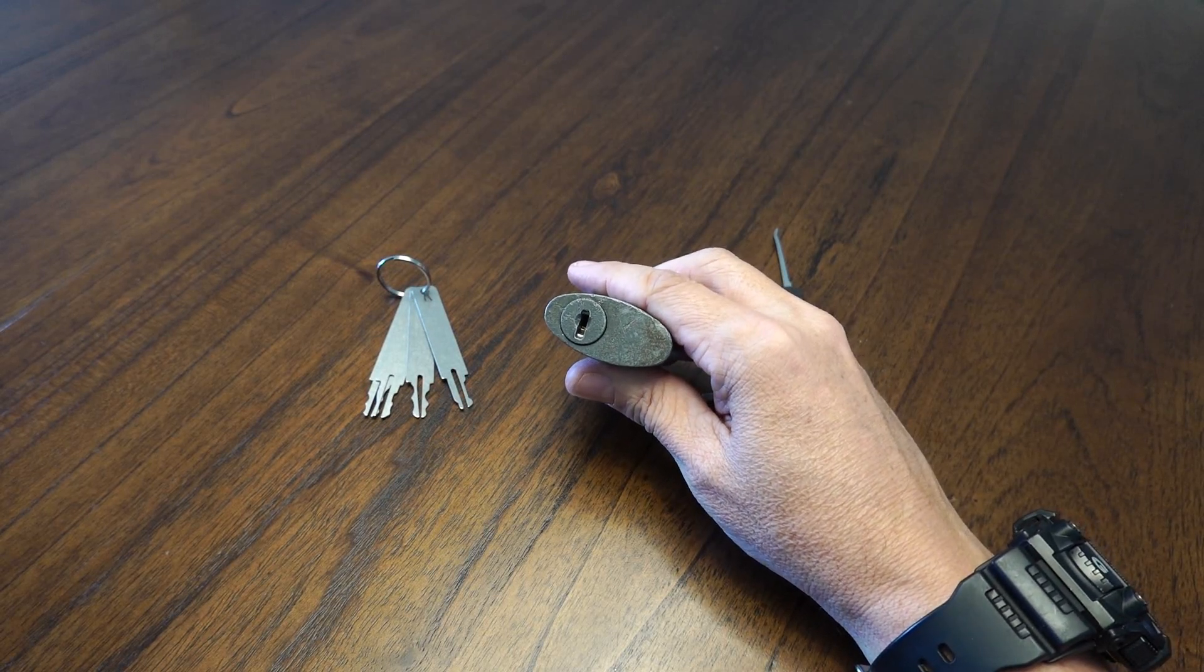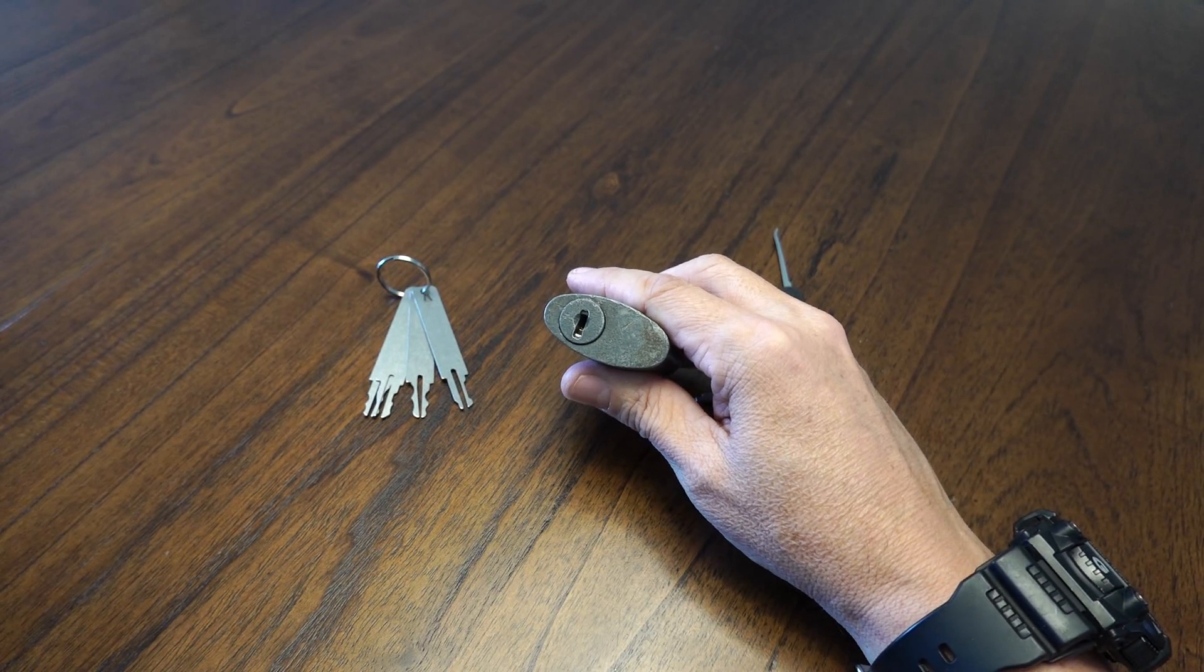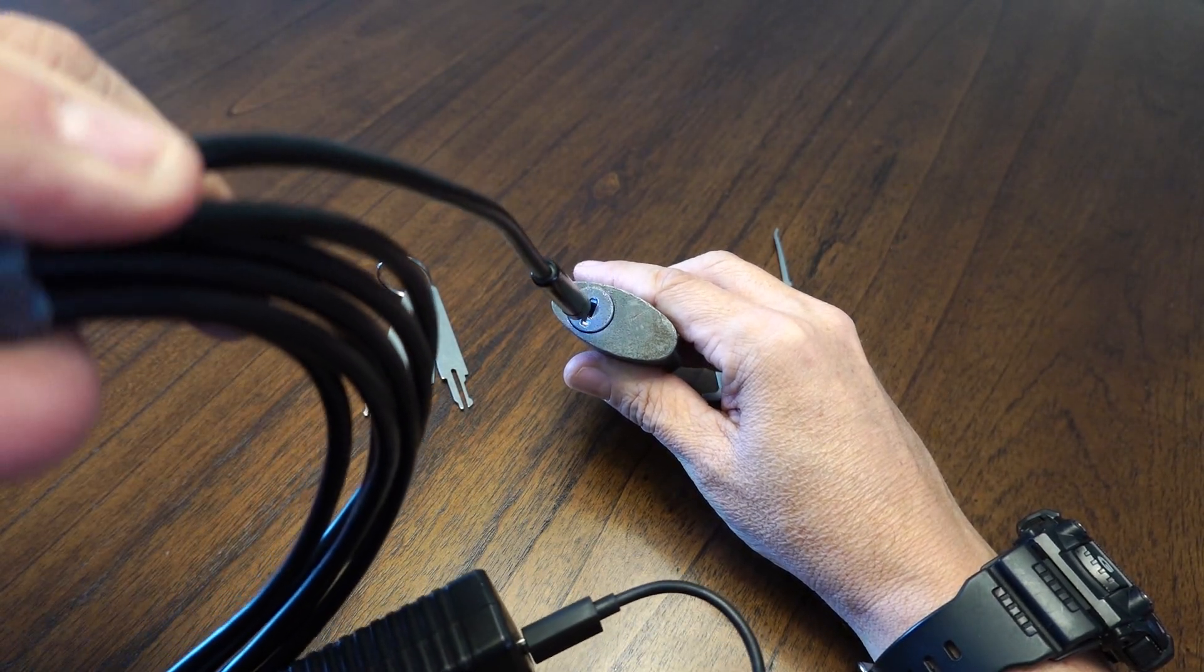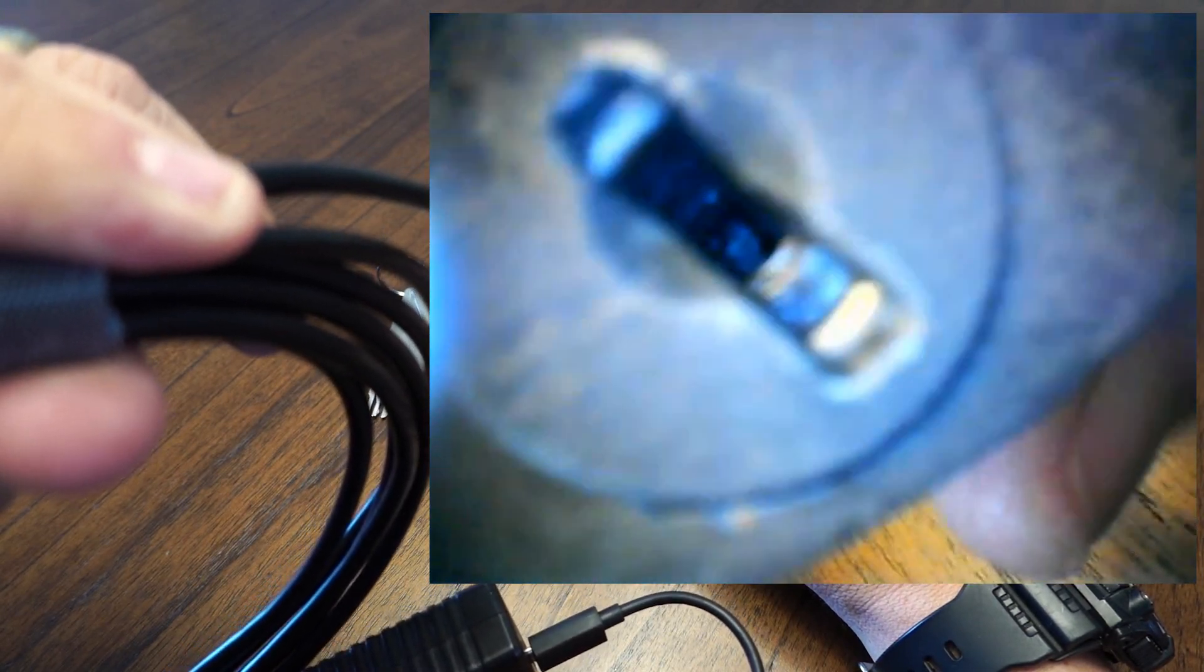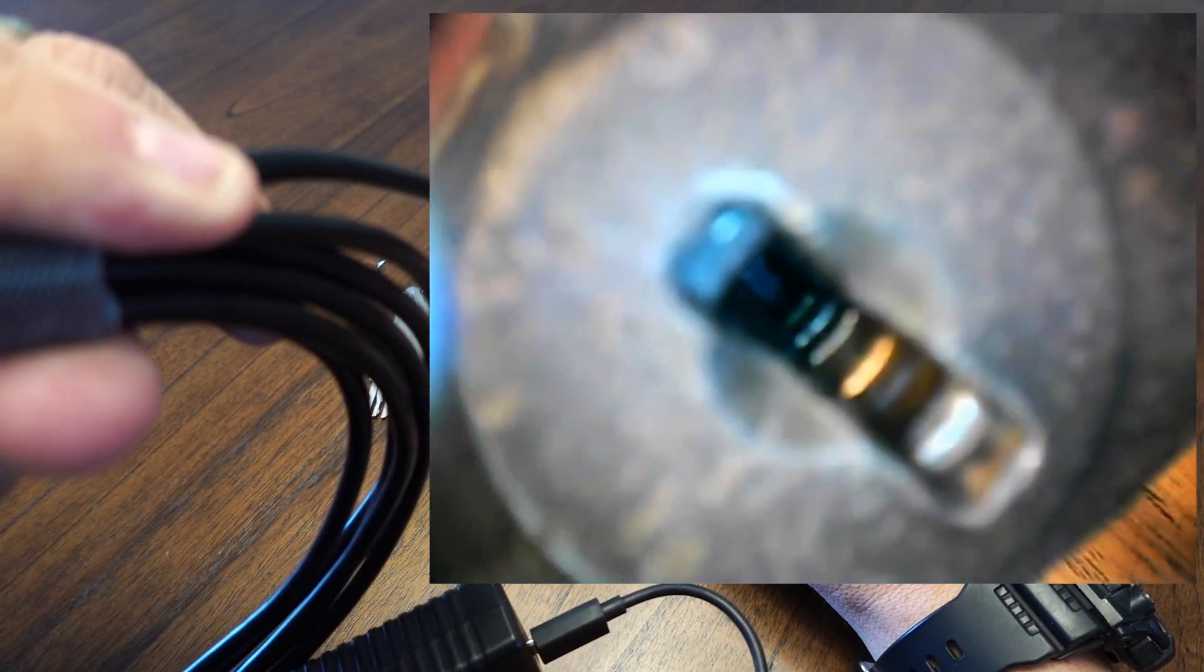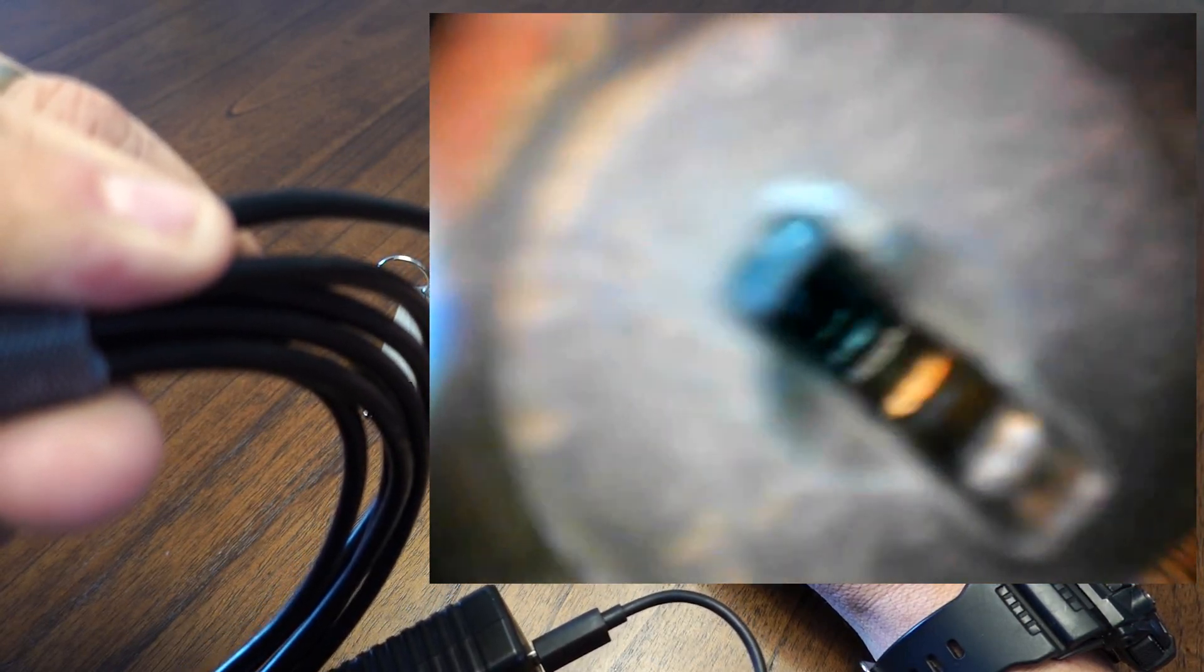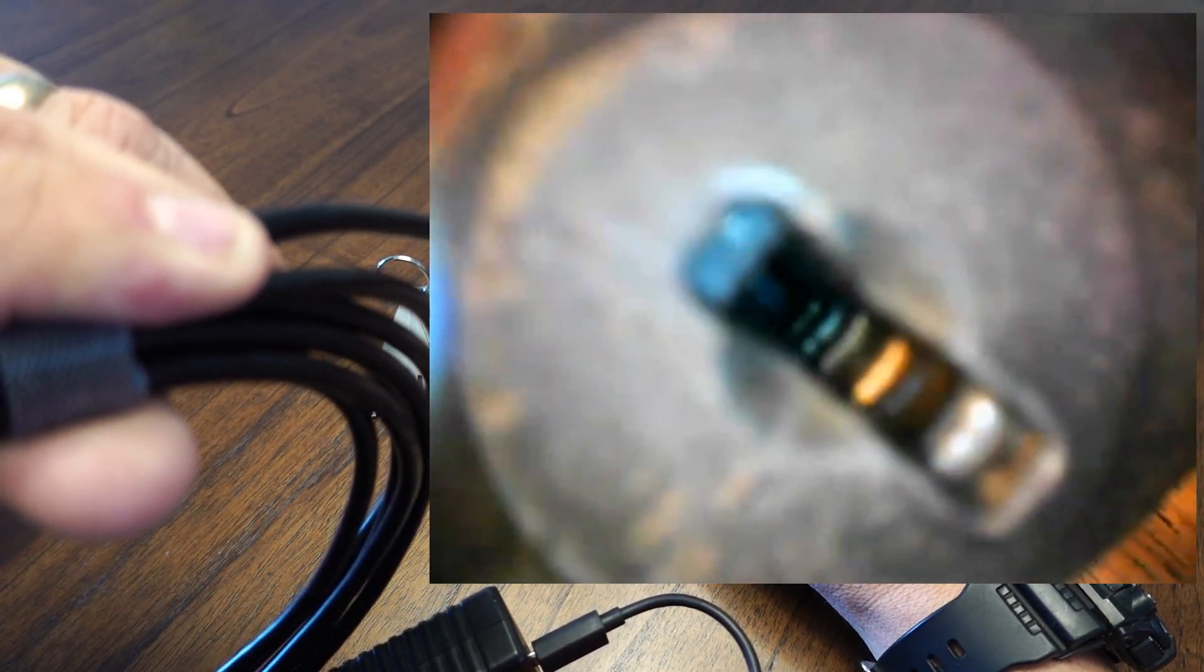...to show what the insides look like. I'm gonna make that a little bit brighter and see if we can show the insides. What I am seeing are the wafers, and you can count one, two, three, four of them, but I think there's actually five. One, two, three, four... yeah, so anyway.